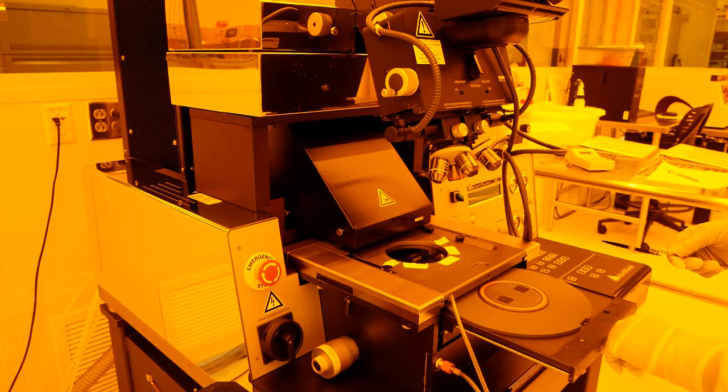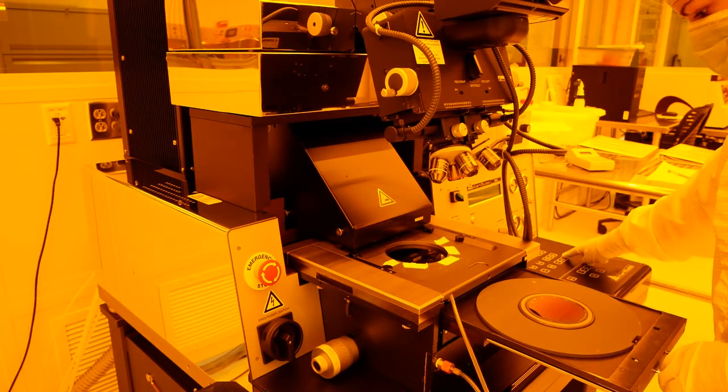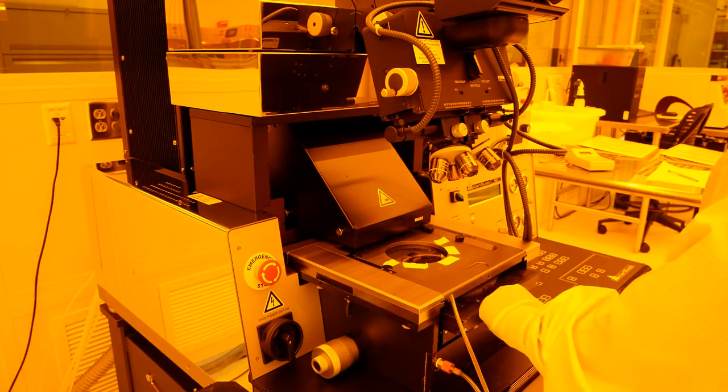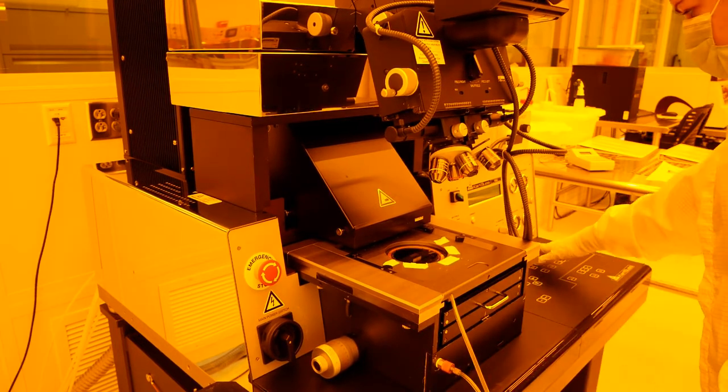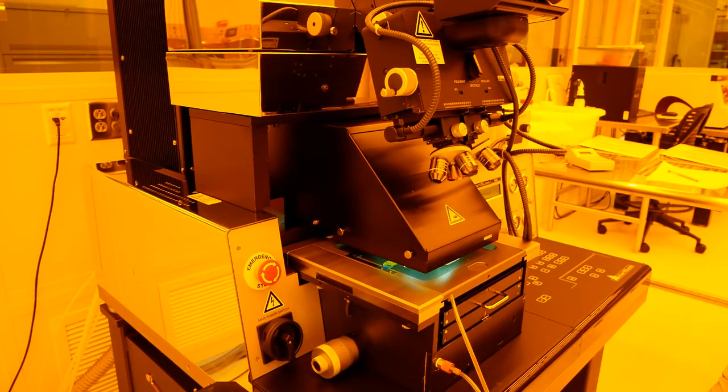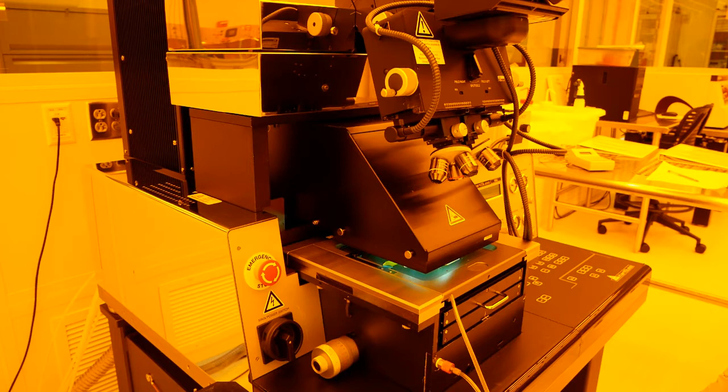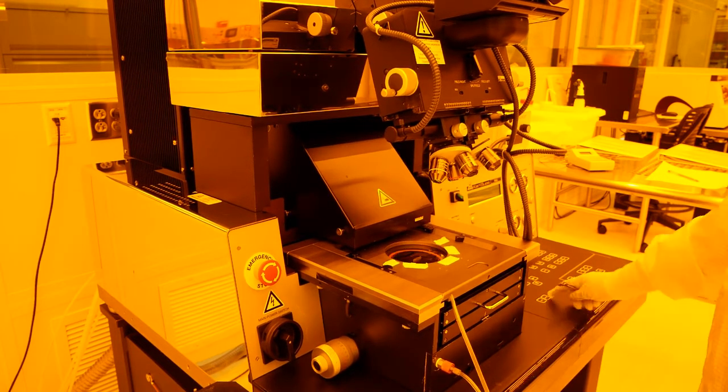Now we write the pattern onto the substrate. The mask is aligned on top of the sample using the mask aligner. A UV lamp exposes light onto the sample where it starts a reaction within the unmasked photoresist. Then the substrate is baked to finish the chemical reactions from UV exposure.